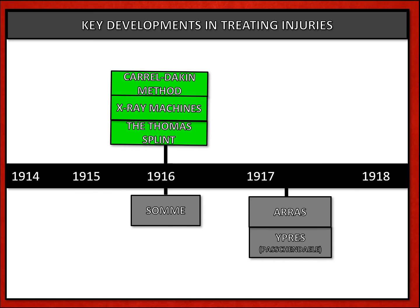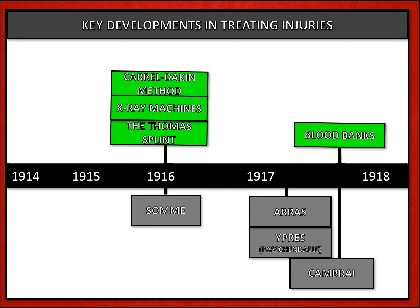In 1917 there were three major battles - Arras, Passchendaele, and the Third Battle of Ypres. By this time, blood transfusions were available and could be performed, but it was only at the Battle of Cambrai in November 1917 that a blood bank was ready before a major offensive took place. As you can see, that only happened towards the end of the war.